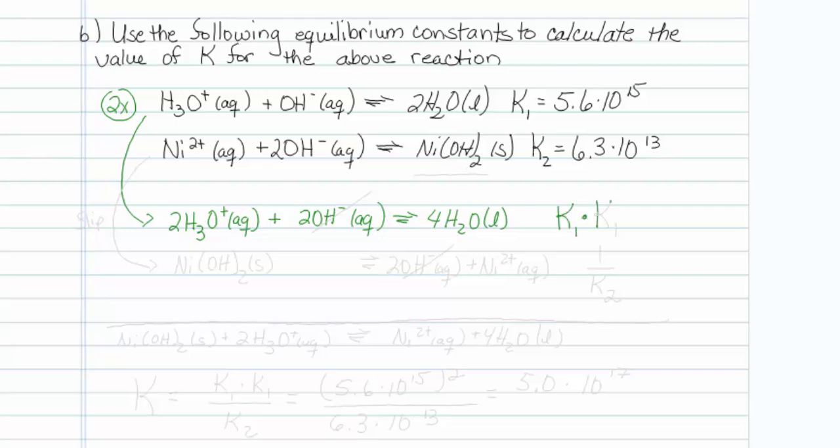So double the reaction means raise it to the second power. So the equilibrium constant for this first reaction is actually equal to K1 times K1.